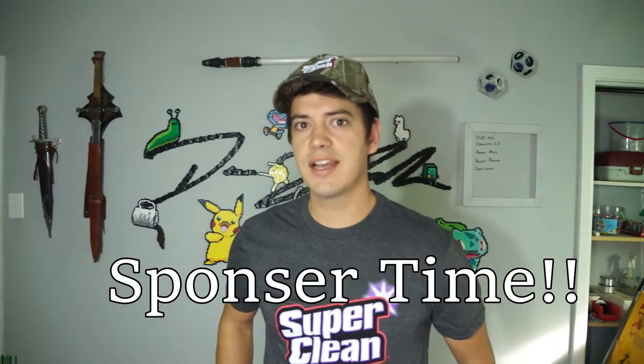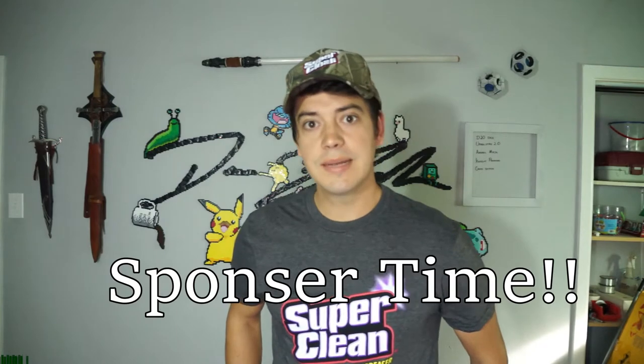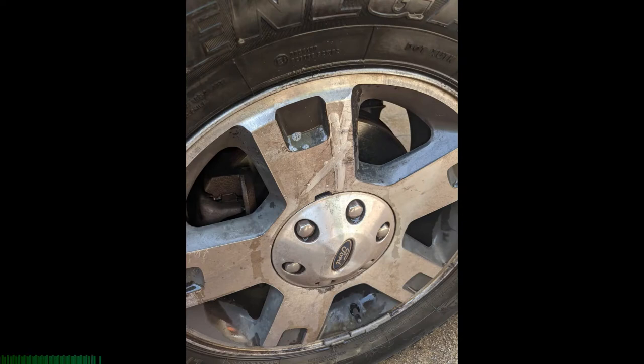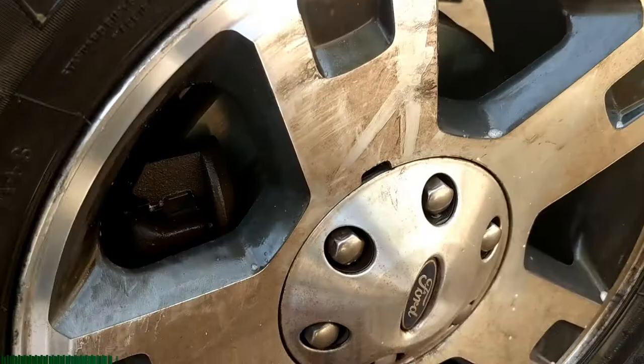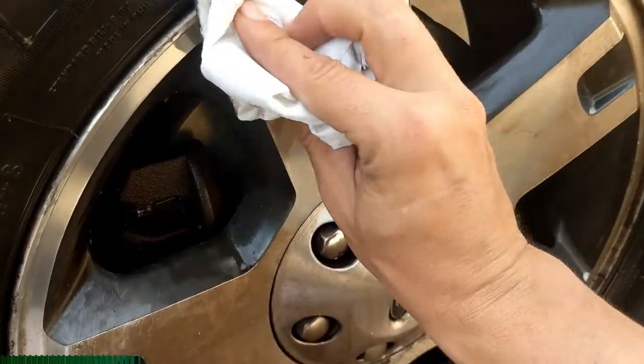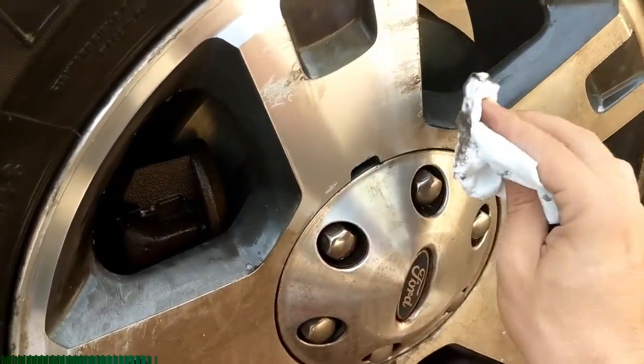Super Clean is a tough task cleaning degreaser. They sent me some of their products to try out, and I've been using them around the house for the last two weeks, a month, and it works pretty good. They've got a wheel cleaner, a floor absorbent product for soaking up spills in the garage like oil spills and gasoline.